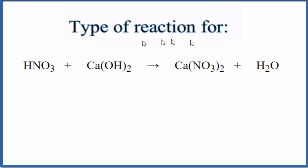In this video, we'll take a look at the type of reaction for HNO3 plus Ca(OH)2. This is nitric acid, and this is calcium hydroxide.